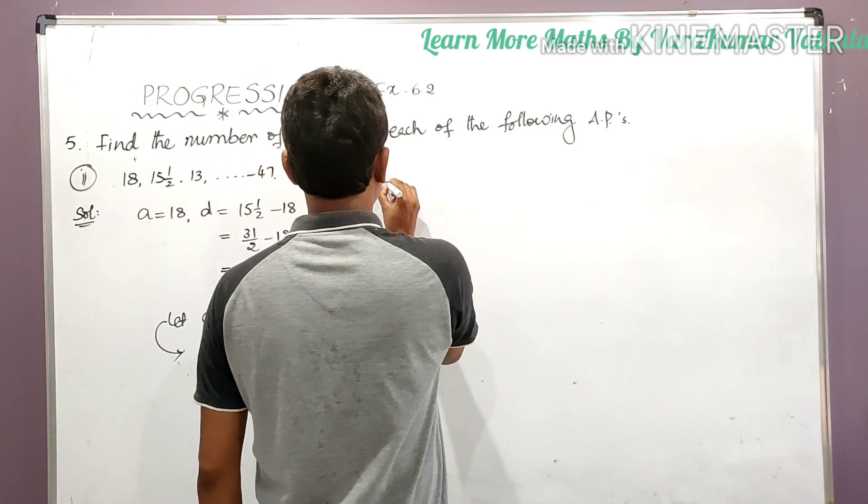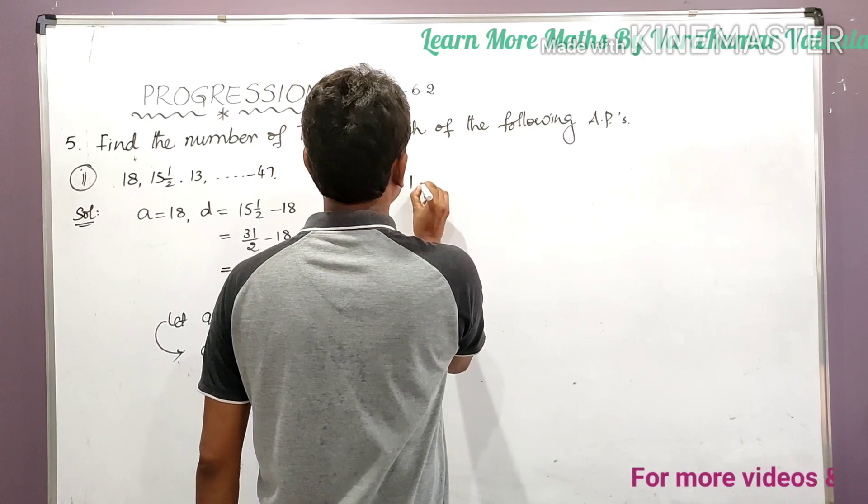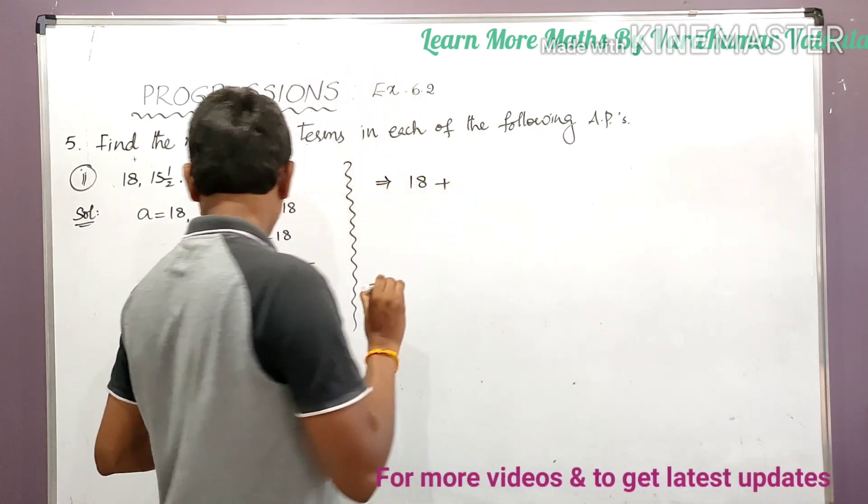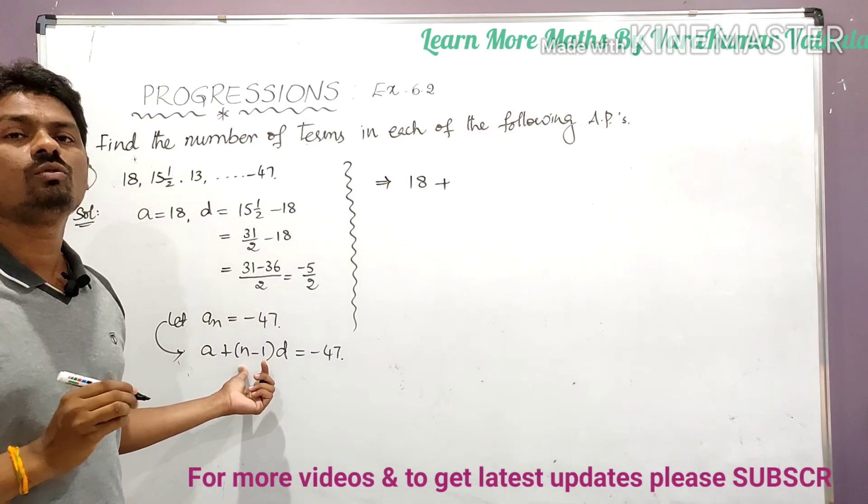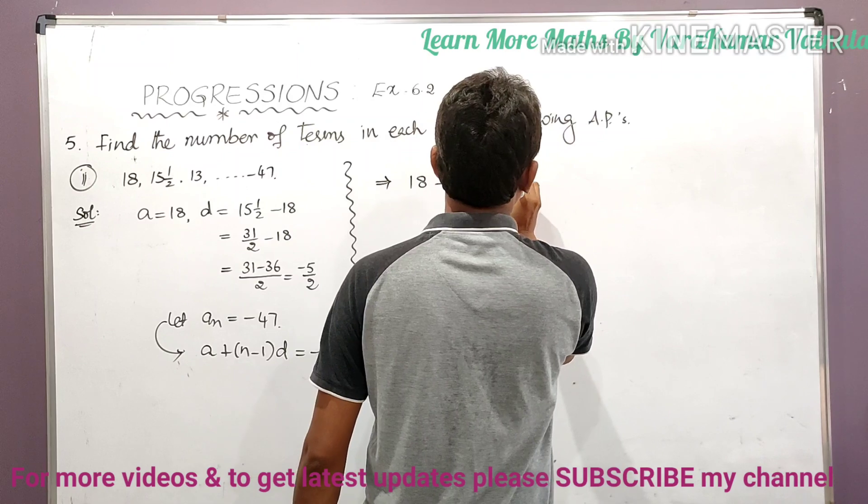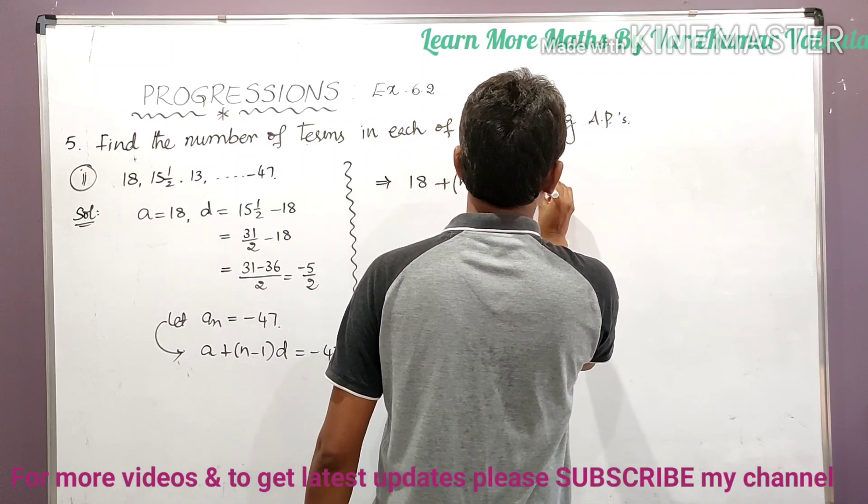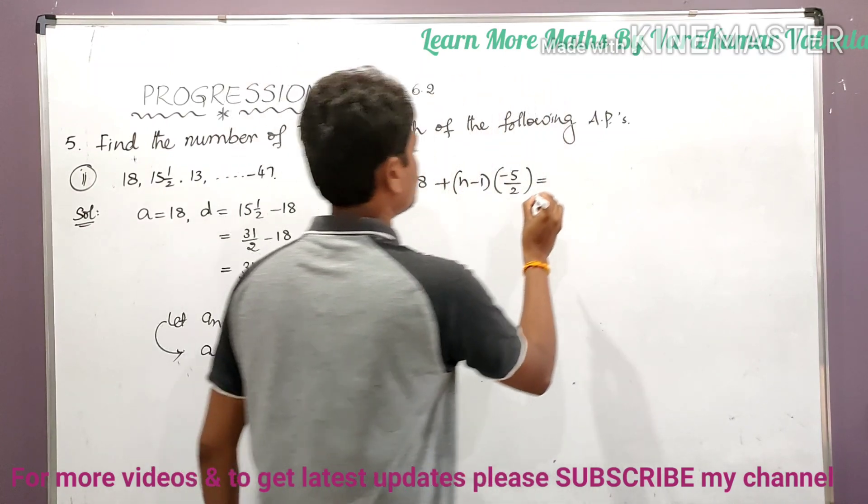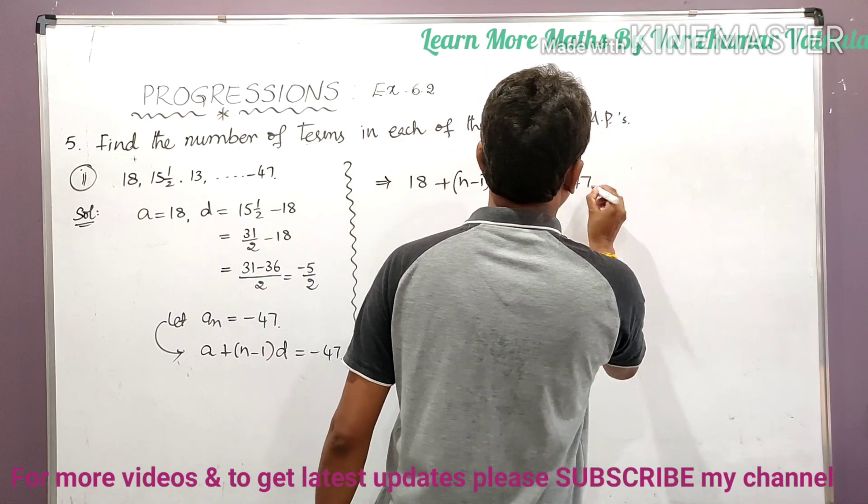Substitute in the formula: a is equal to 18 and d is equal to minus 5/2. Substitute in the formula, a is equal to 18 plus (n minus 1). So right, as usual we have to find the n value. So (n minus 1) into d is minus 5/2 is equal to how much, minus 47.